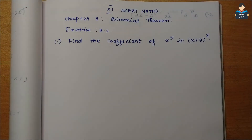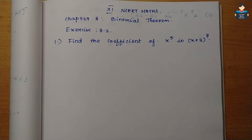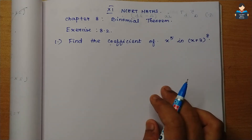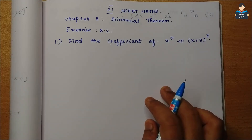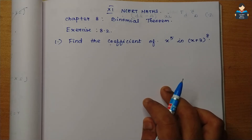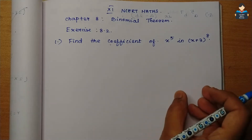Hello everyone, welcome to our channel. In this video we cover 11th standard NCERT Maths Chapter 8, Binomial Theorem, Exercise 8.2. The first sum: find the coefficient of x to the power 5 in (x + 3) to the whole power 8.